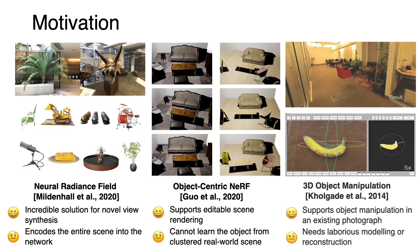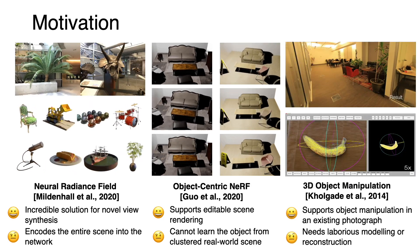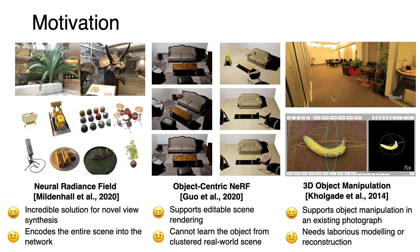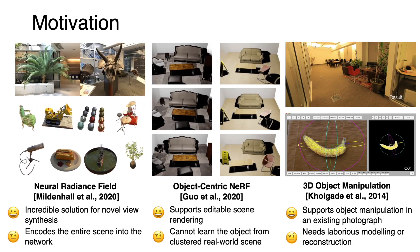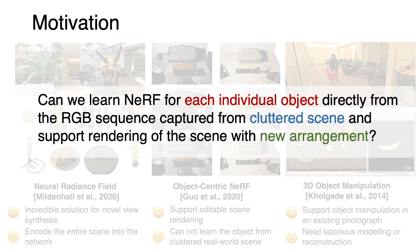While some early works realize object manipulation in an existing photograph, they require laborious modeling, fitting, and reconstruction with human interactions. A common follow-up question to ask is: can we learn NeRF for each individual object directly from the RGB sequence captured from a cluttered scene, and support rendering of the scene with a new arrangement?